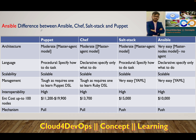Hi everyone, welcome to the last lecture of the Ansible series. In this lecture we will try to differentiate between Ansible, Chef, SaltStack, and Puppet — the four players of configuration management in the market. I'm aware of the top four players; if you're aware of any other configuration management tool, feel free to place a comment in the comment section. We will not do a detailed discussion on the mechanism of Puppet, Chef, or SaltStack — instead we will just see the differences between the four players.